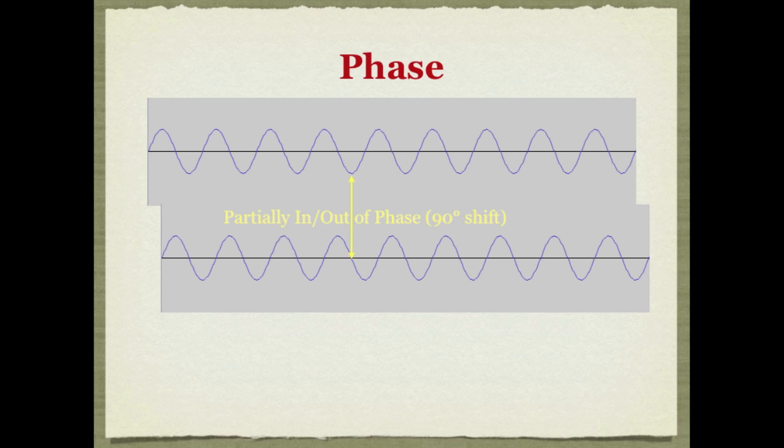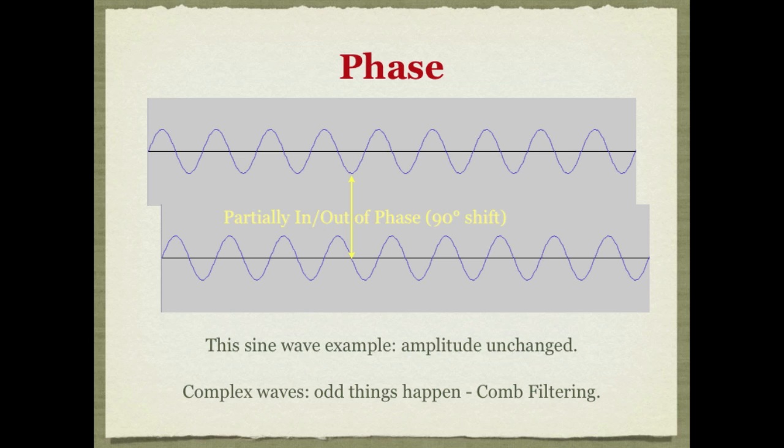And if we mixed these two identical copies of a simple sine wave together, we'd end up with an amplitude that's unchanged. But that's different from complex waves. So let's take a look at that.